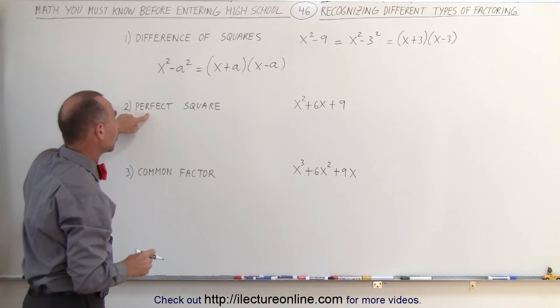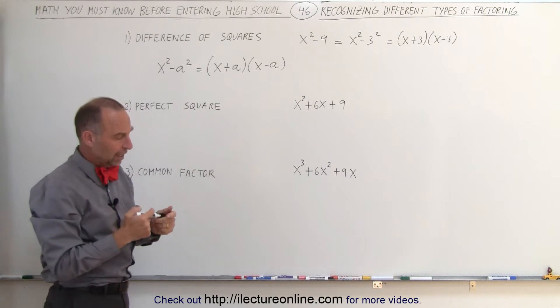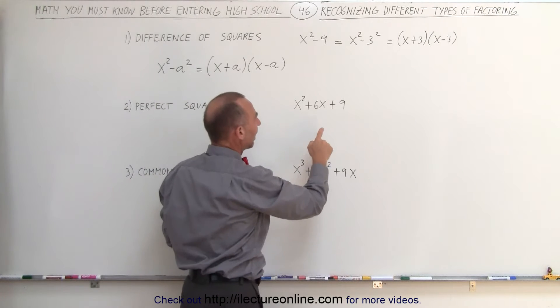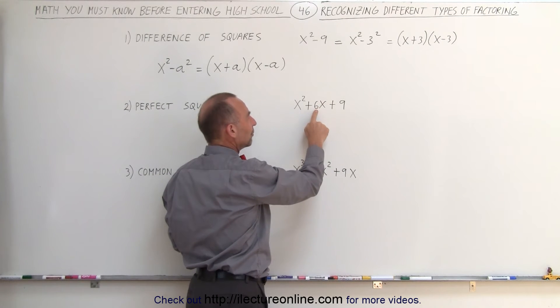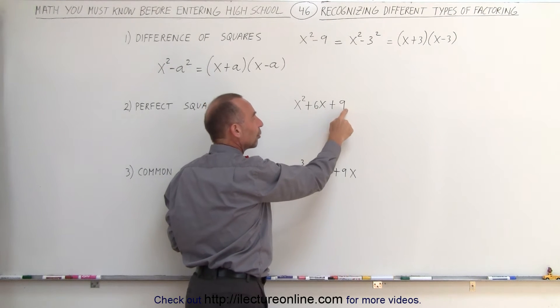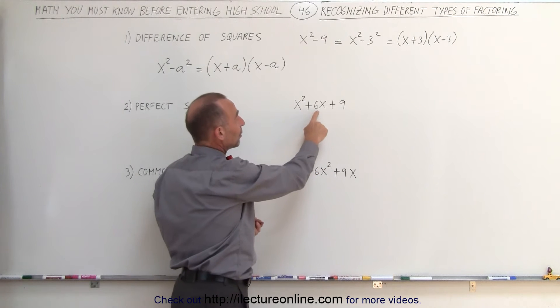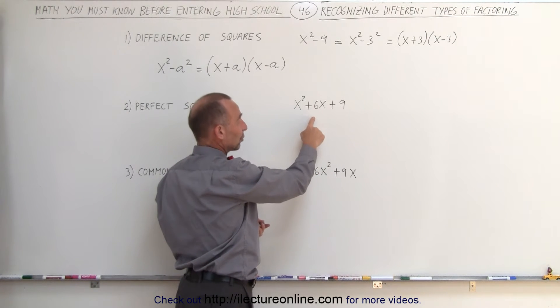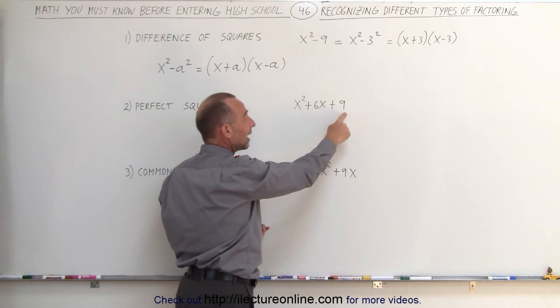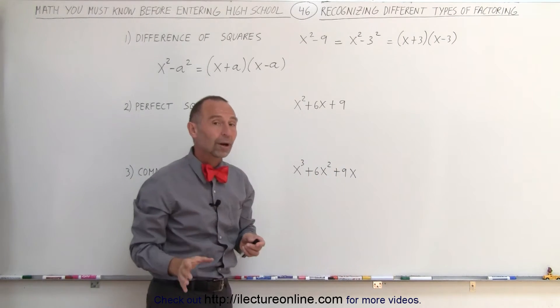Next, we may end up with something that's called the perfect square. If we have a trinomial like this, and the coefficient of the middle term, if we take that coefficient, divide it by 2 and square it, and we get the third number, then we have a perfect square. For example, when we take 6 and divide it by 2, we get 3. 3 squared gives us 9. Therefore, this is what we call a perfect square.